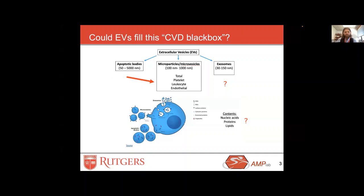Some people have raised high blood glucose or blood lipids, but that doesn't answer the entire story. Some estimates suggest 50% is a black box — we still don't really know. That's why I label this: could EVs fill some of that cardiovascular disease black box?